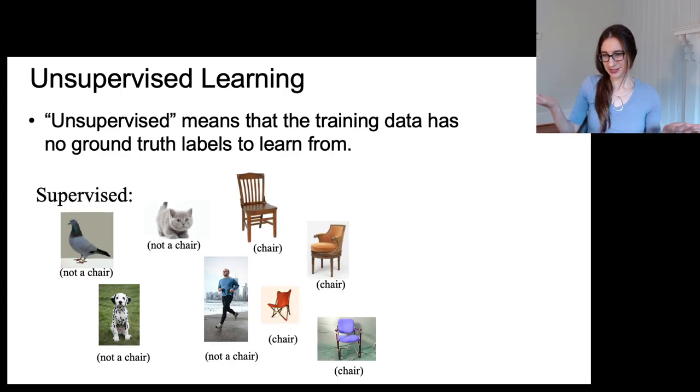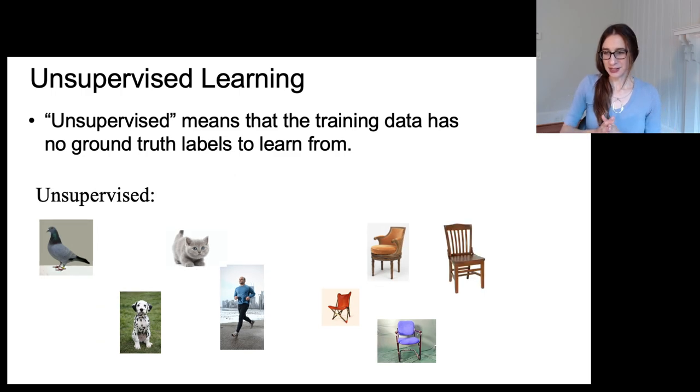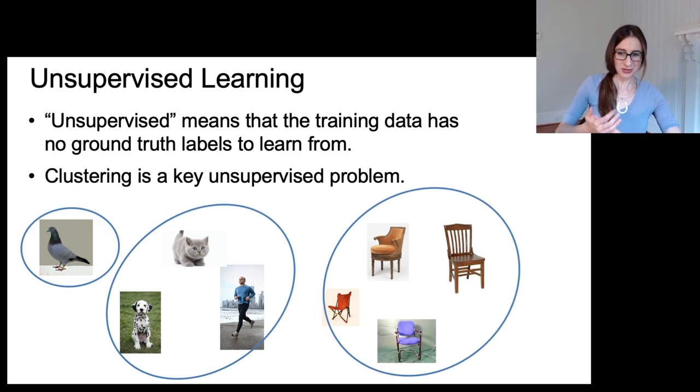So in the supervised setting, all of the data are labeled, and then for a new observation, you have to try to guess the label. Whereas in unsupervised learning, you just get these observations and you have to do something with them. And clustering is a key unsupervised problem, and the goal is to group points into clusters that are somehow similar to each other.